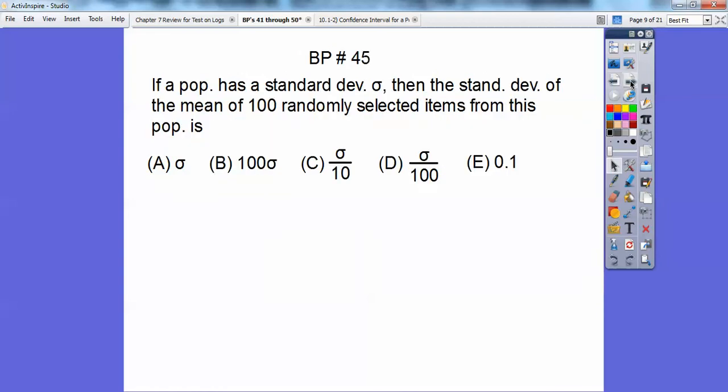In a population has a standard deviation, then the standard deviation of the mean of 100 randomly selected items from this population is, well, if it's your sample standard deviation is your population standard deviation divided by the square root of N, which in this case is 100. So I get choice C.